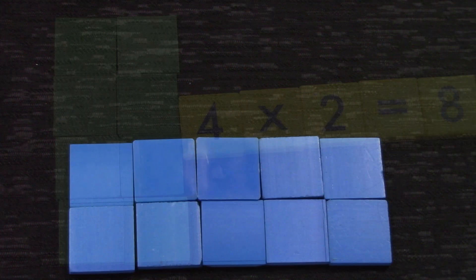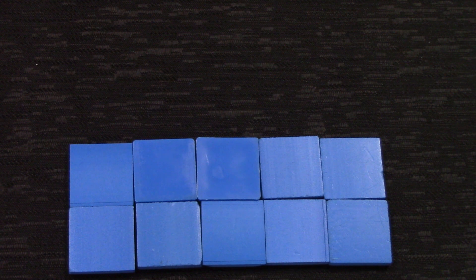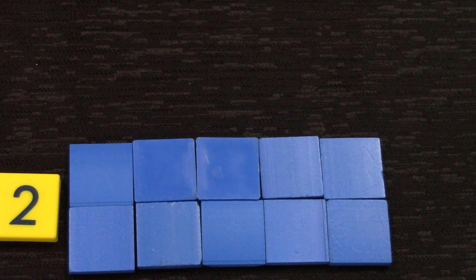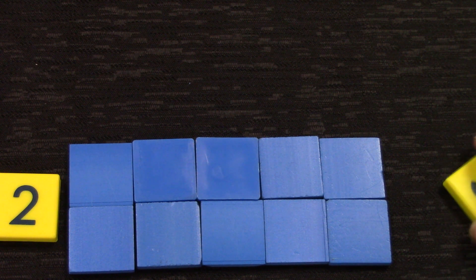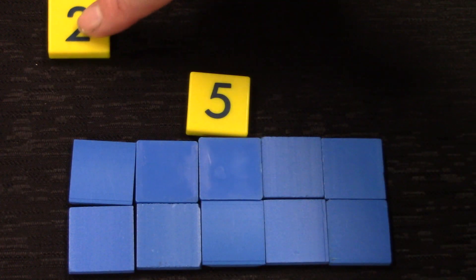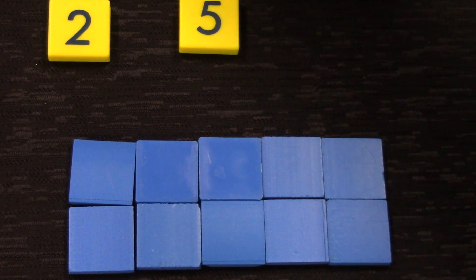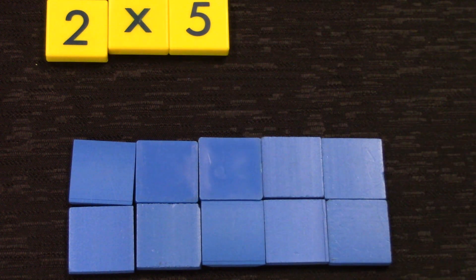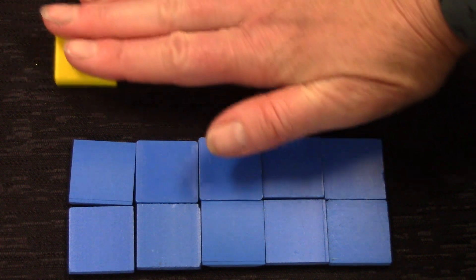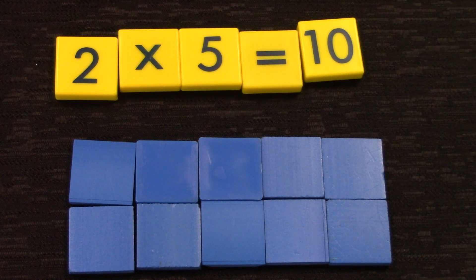Let's try another array. We would label this array just as we did the other two. There are two rows with five in each row. If we were to make a number sentence, we would say two times five equals 10.